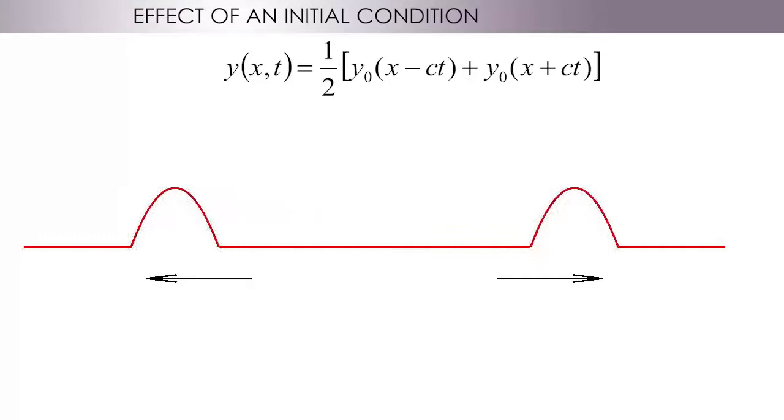The initial shape splits in two halves that go in opposite directions corresponding to f and g. These two shapes stay undeformed. Why? Because they are always made with the same functions f and g, and changing time is just like changing the x coordinate. The shape at a given time t is found somewhere else at a later time. We have a wave propagation. What is the velocity of the propagation? It is the quantity c, the same in both directions.